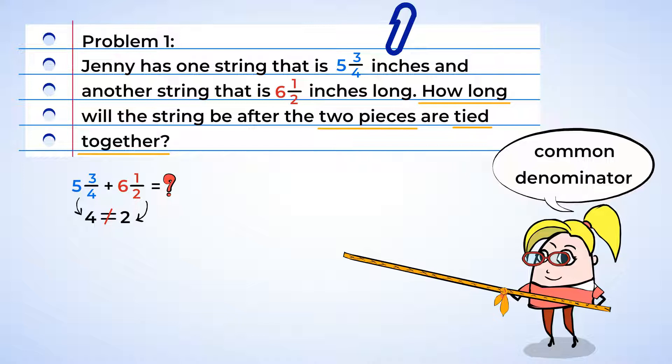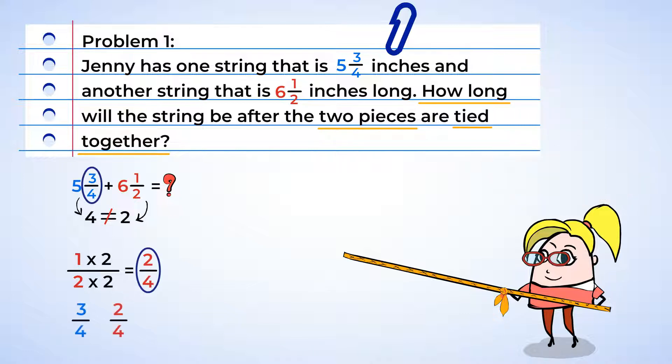Since 2 is a factor of 4, to get a denominator of 4 in the fraction ½, we need to multiply by 2, both the denominator and the numerator, and so then we would get the equivalent fraction of 2/4. Now both fractions have the same denominator, and we can add them together.